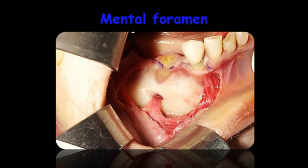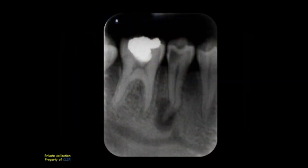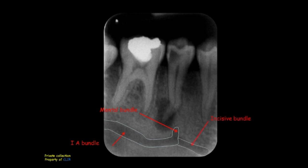As you know, the mental foramen is the anterior exit of the inferior alveolar canal. As we can see on this periapical image, the inferior alveolar neurovascular bundle will split into two parts. A large trunk will exit the mandible through the mental foramen — called the mental nerve — and a small trunk, the incisive nerve, will continue anteriorly through the incisive canal.